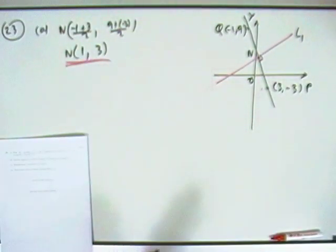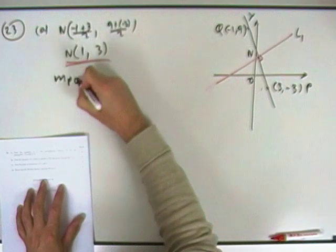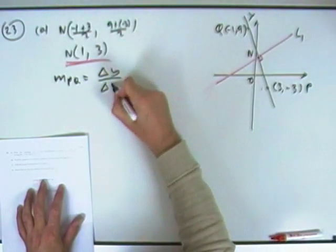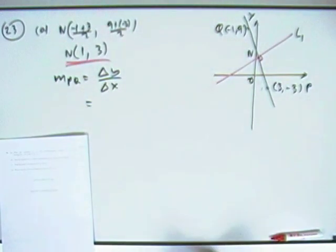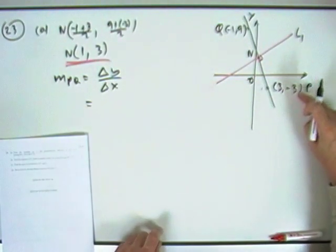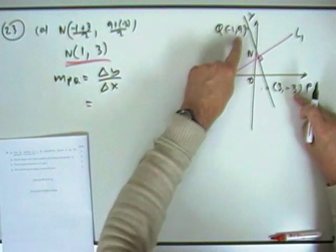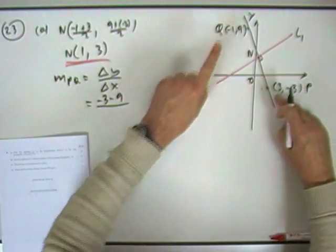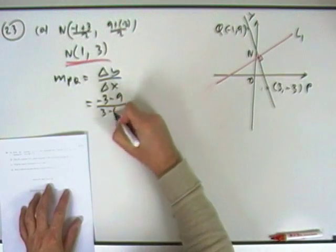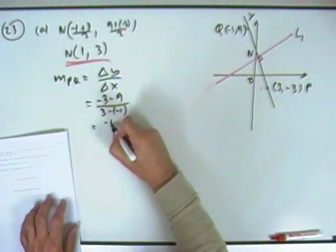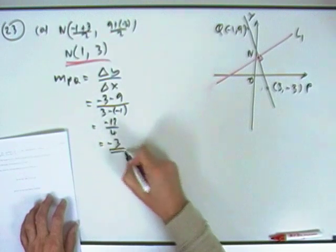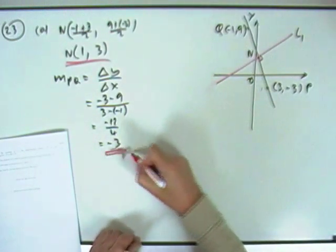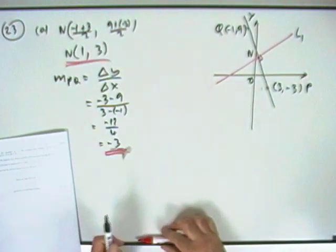Next thing I need is the gradient of QP, because this line is going to be perpendicular to it. So I want to take the difference in the Y over the difference in the X coordinates going between them. So difference in the Y is -3 take away 9, -3 take away 9, difference in X is 3 take away -1, 3 take away -1. So that's -12 and that becomes 4, so that's -3. Again, that's why it's handy to have a diagram, that sort of confirms it. It should be steep downwards, and it is.